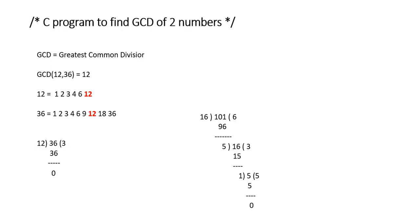We write down the factors of 12 and factors of 36, and then we take the common factors. The common factors are 1, 2, 3, 4, 6, and the next common factor is 12. Out of these common factors, 12 is the highest common factor, so it is treated as GCD. Now, 12 is the GCD of 12 and 36.